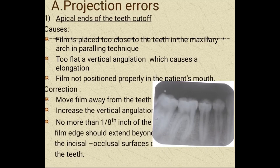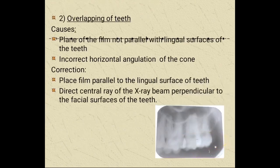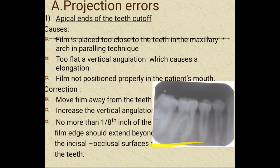The first projection error is the apical end of the teeth being cut off. The main cause is the film is placed too close to the teeth in the maxillary arch in the paralleling technique, too flat a vertical angulation causing elongation, or the film not positioned properly in the patient's mouth. This means the periapical area will not show correctly. To correct it, move the film away from the teeth, increase the vertical angulation, and ensure no more than one-eighth of an inch of the film extends beyond the incisal or occlusal surface of the teeth.